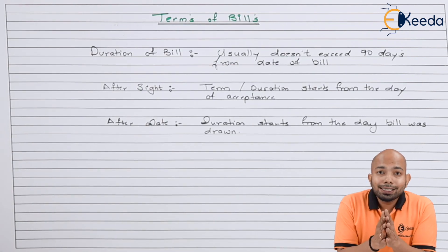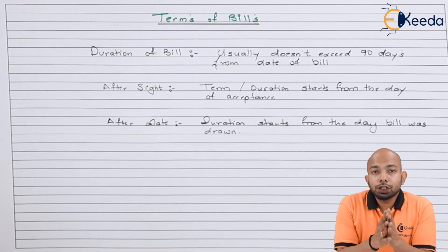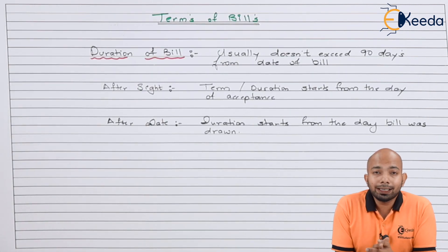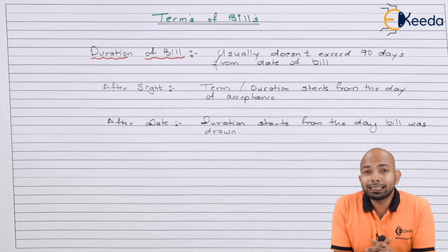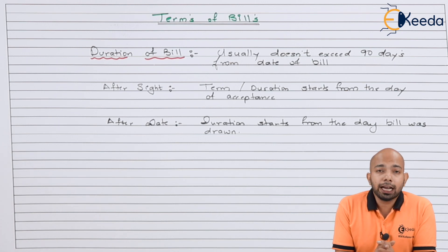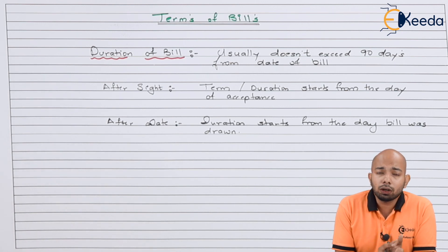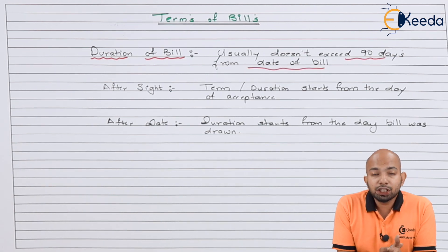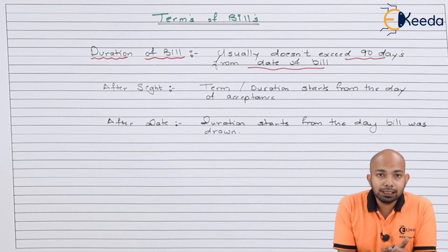The first term we'll be understanding is the duration of the bill. Usually, the duration of the bill doesn't exceed 90 days from the date it has been drawn. So whenever the bill has been drawn, 90 days is the maximum tenure given. This duration is affected by two things: first, if it is an 'after sight' bill, and second, if it is an 'after date' bill.